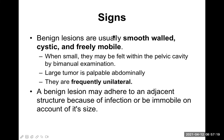On physical examination, benign lesions are typically smooth-walled, cystic, and freely mobile — these are the hallmarks of benign tumor. They have a capsule that makes them smooth-walled. A fluctuation test is positive in cystic masses, but since they are deep in the abdominal cavity, these tests are limited. When small, they may be felt within the pelvic cavity by bimanual examination; large tumors are palpable abdominally. They are more frequently unilateral than bilateral.